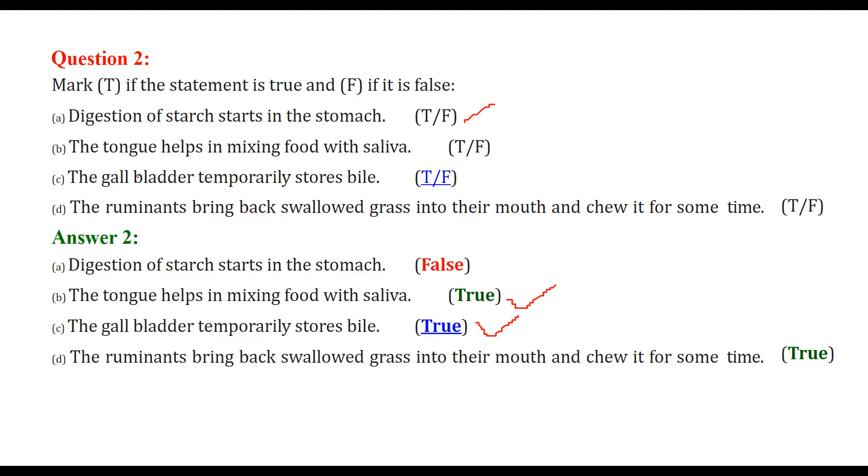The gallbladder temporarily stores bile. This is true. The ruminants bring back swallowed grass into their mouth and chew it for some time. You might have seen goat, cow, and buffalo. They first swallow the grass and after some time they take it out and then they chew it. So this is true.